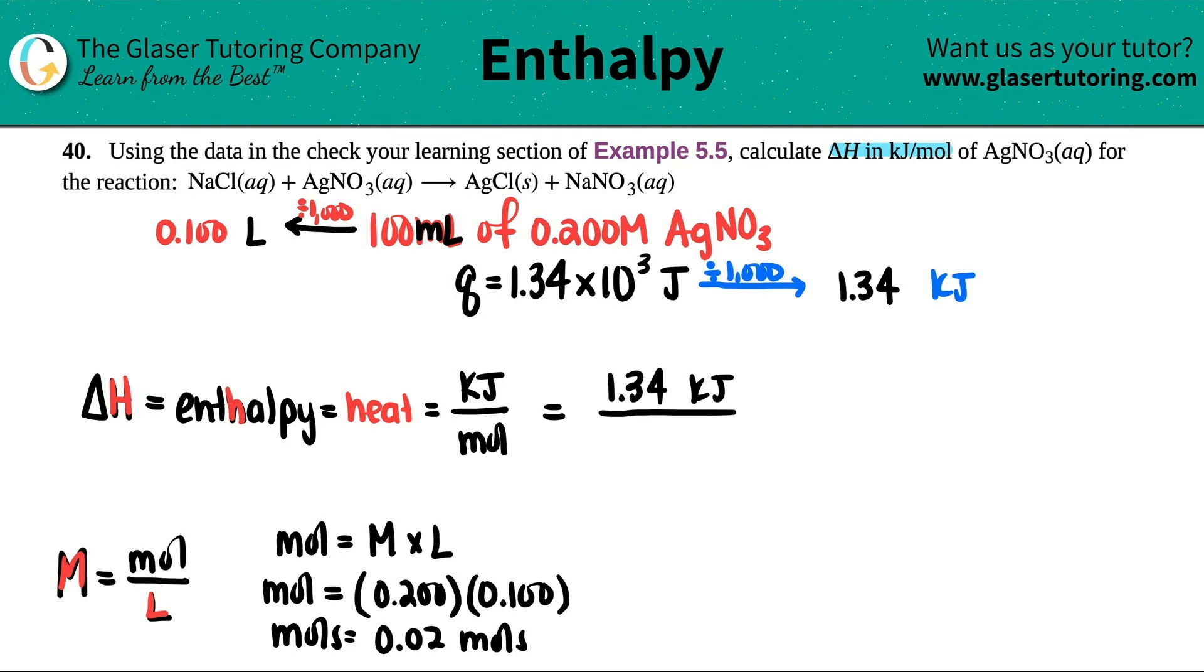That's going to be on the bottom. Now I just divide these numbers. Notice the units are not going to cancel because they're two different units. Kilojoules on top, moles on the bottom, they don't cancel, so the units will stay. 1.34 divided by 0.02, I get 67. So 67 kilojoules per mole. That's the answer. For every one mole of silver nitrate, AgNO3, there will be 67 kilojoules of heat that are absorbed because this is endothermic, it's a positive number.